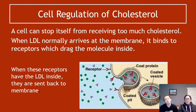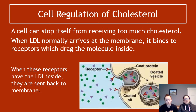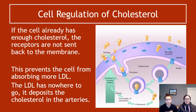A cell can stop itself getting too much cholesterol using receptors. When LDL arrives at the cell membrane, it binds to receptors which drag the molecule inside — part of the membrane actually pulls itself inward with those receptors. Under normal conditions, once the LDL is inside, the receptors are sent back to the membrane to go and collect more cholesterol. However, if the cell already has enough cholesterol, the receptors don't get sent back to the membrane.